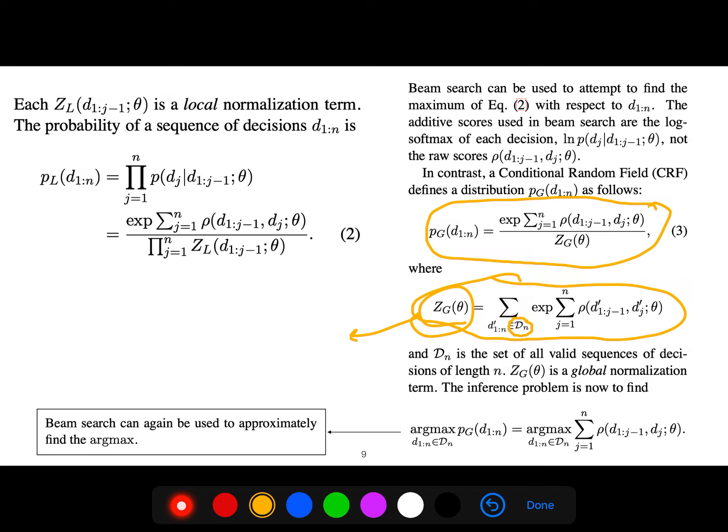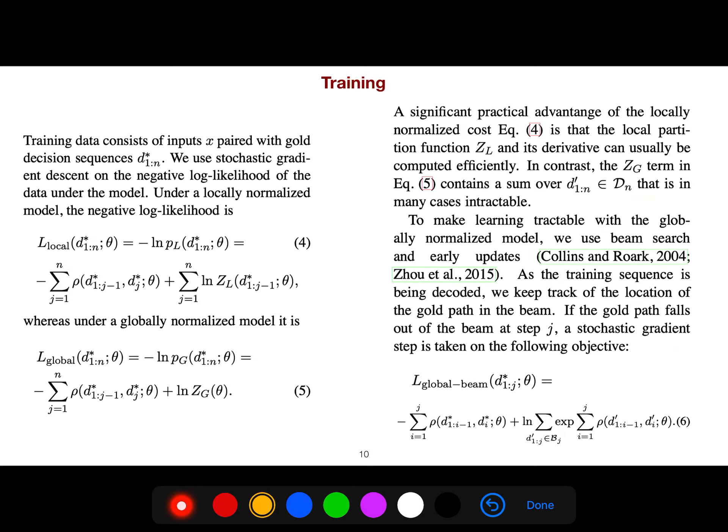It's aware of all of the context, not just one local thing with the greedy approach. The training is different. Under locally normalized models we used to do one thing, but for globally normalized we use ZG instead of ZL.